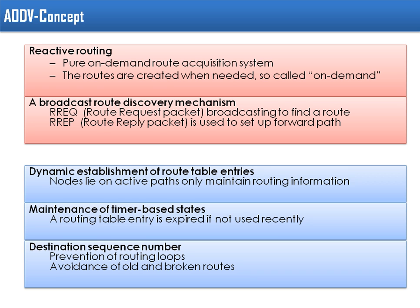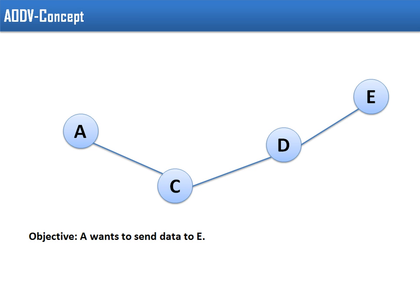If the information is old or not fresh, the destination sequence number can be used to check whether incoming path information is fresh or not. The inclusion of this sequence number also avoids routing loops and the count-to-infinity problem. Now let's take an example — we have four nodes: A, C, D, and E. Our objective is that A wants to send data to E.